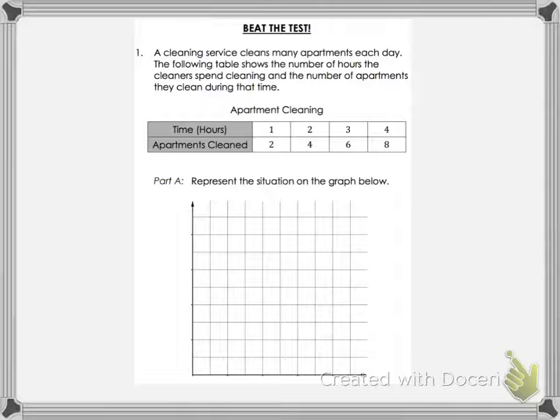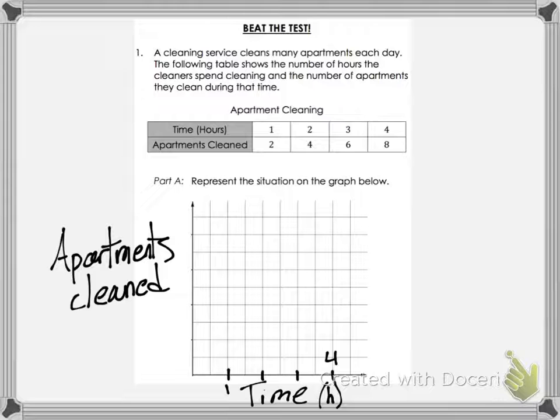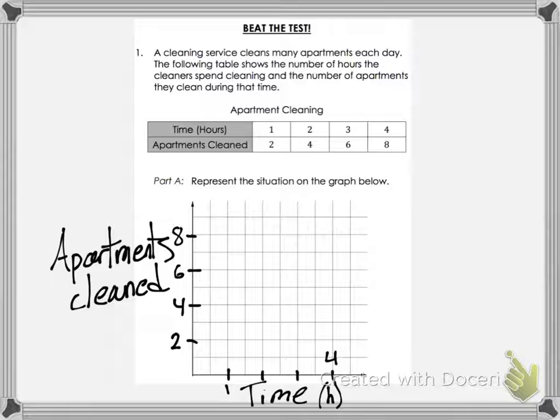A cleaning service cleans many apartments each day. The following table shows the number of hours the cleaners spend cleaning and the number of apartments they clean. Part A: represent the situation on the graph. The x-axis will be time in hours, and the y-axis will be apartments cleaned. Time is the independent variable and apartments is the dependent variable. Our time runs from 1 to 4 hours on the x-axis, and on the y-axis we count 2, 4, 6, 8. Plot all the points.